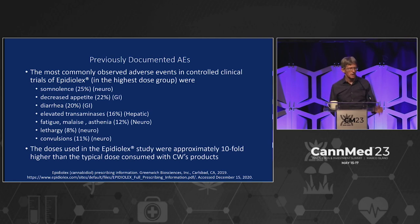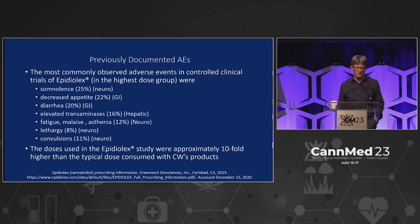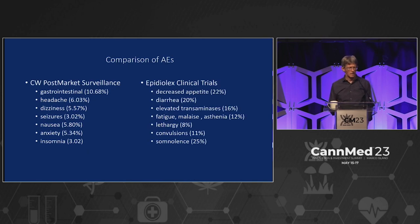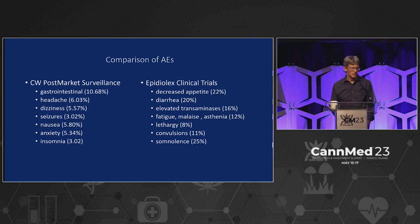Now, previously documented AEs: let's look at the Epidiolex study. Somnolence at 25% of the AEs, decreased appetite 22%, diarrhea 20%, elevated transaminases about 16%, fatigue/malaise/asthenia about 12%, lethargy 8%, and convulsions about 11%. These doses are about tenfold higher than typically used by Charlotte's Web consumers. Comparing the two: on one side we have the post-market surveillance at lower doses; on the other, the Epidiolex clinical trials. There is commonality in gastrointestinal effects, and some in fatigue and malaise/nausea, but really not a lot of correlations beyond that.